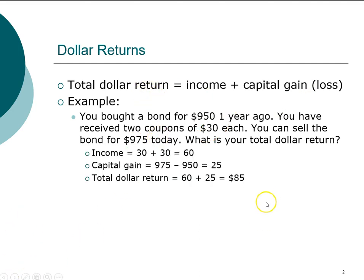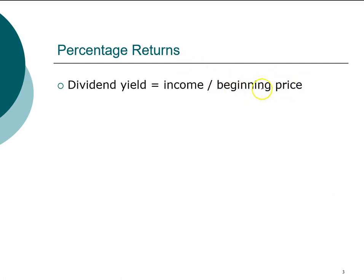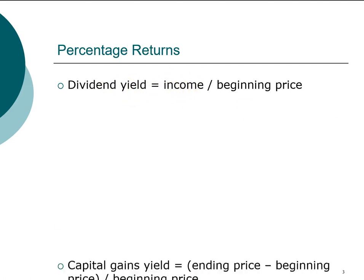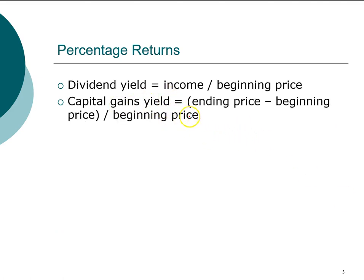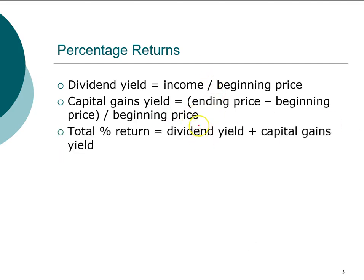Expressing dollar return is the first step, but often we want to express return as a percentage, making it easier to compare one investment against another. To convert dollar return into a percentage return, we use the beginning price — the initial investment — as the denominator. Dividing income return by the beginning price gives the income yield (or dividend yield for stocks), and dividing the capital gain by the beginning price gives the capital gains yield. The total percentage return is the income yield plus the capital gains yield.